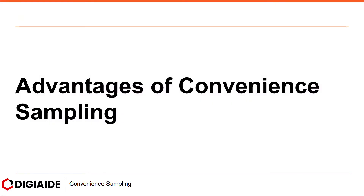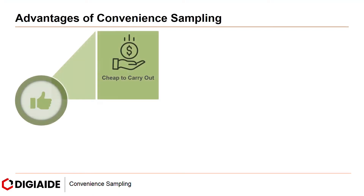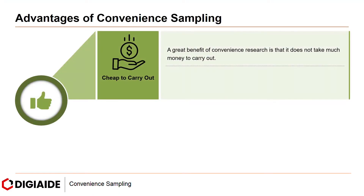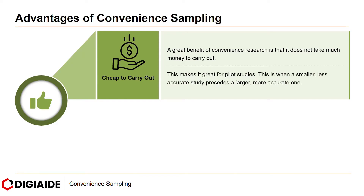Moving on to Advantages of Convenience Sampling. First: cheap to carry out. A great benefit of convenience research is that it does not take much money to carry out. This makes it great for pilot studies — when a smaller, less accurate study precedes a larger, more accurate one.